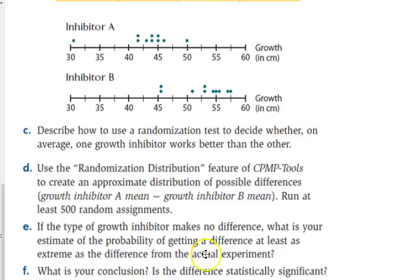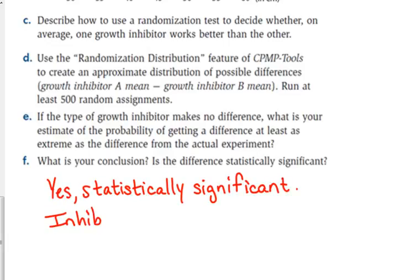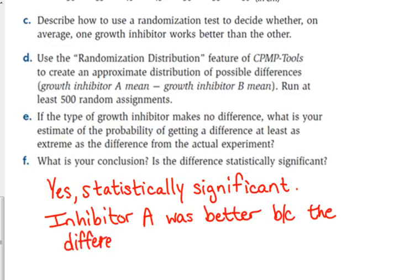So, the conclusion is that it is statistically significant. Inhibitor A did a better job, was the better, was better. Because the difference in the means was in the outer 5% of the distribution.